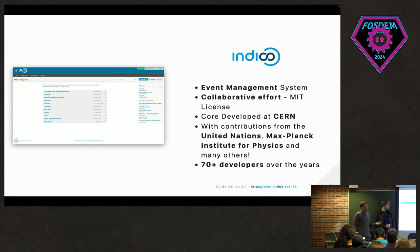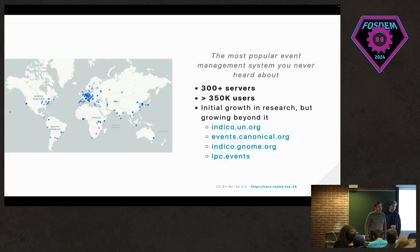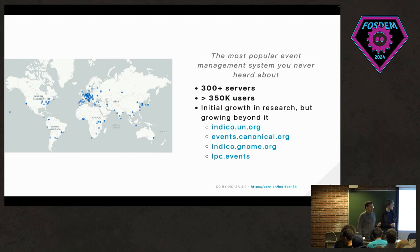It's developed at CERN mainly, with contributions from the United Nations and the Max Planck Institute for Physics, and it counts with contributions from more than 70 developers over the last roughly 20 years. Indico is probably the most popular event management system you've never heard about. There are something like 300 servers around the world, most belonging to educational, research, and scientific institutions, serving more than 350,000 users.